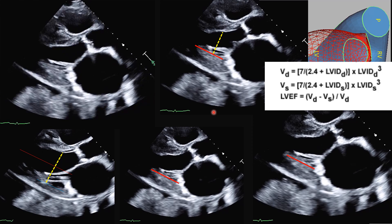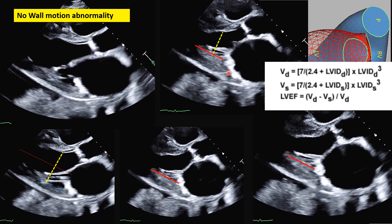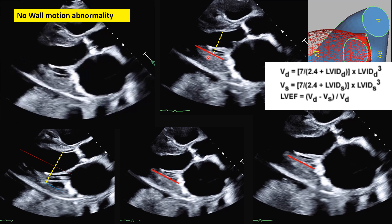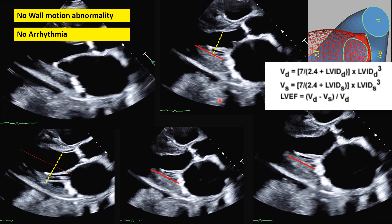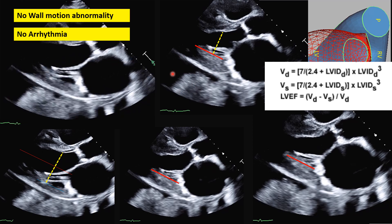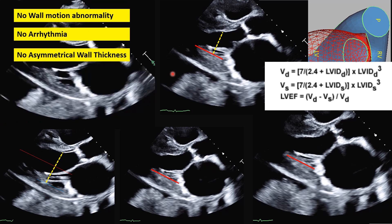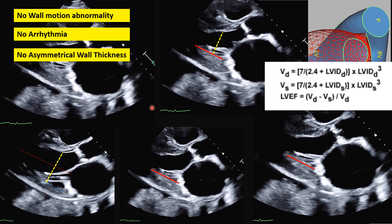This technique is only reliable and accurate when: first, there is no wall motion abnormality — if there is, measuring the systolic dimension is pointless and will always be wrong. Second, when there is arrhythmia — including irregular beats, bundle branch block, or AFib with too much beat-to-beat variation — the technique is less reliable. In AFib, we average at least two to three beats. Third, when we have asymmetrical wall thickness, we do not use this technique.